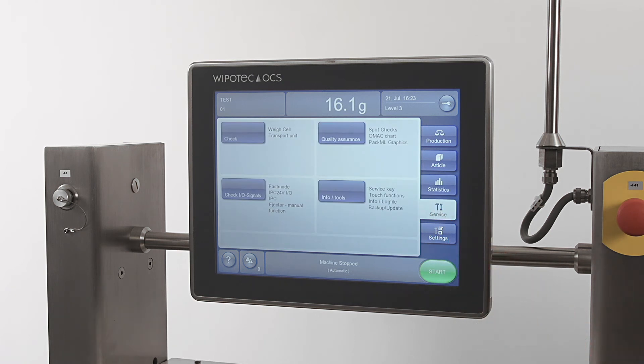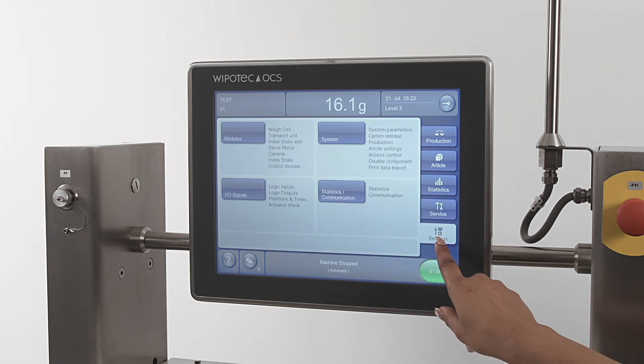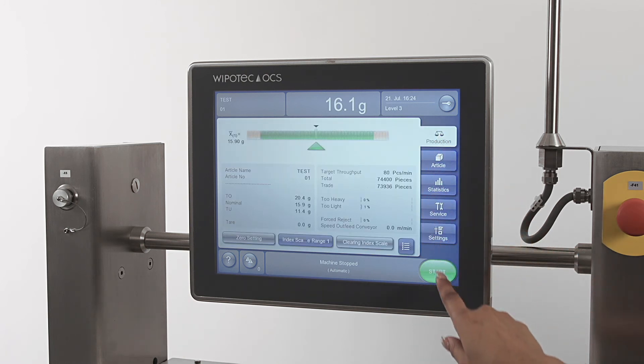Service: reserved for maintenance operations. Settings: other operational parameters. A green oval with the word start in the center indicates that all checkweigher functions are okay and the machine is ready for operation.